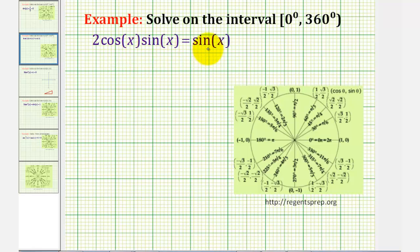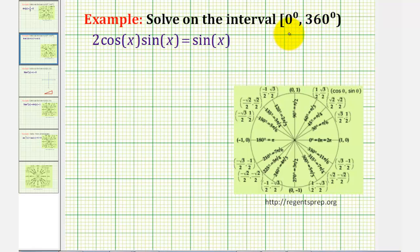We want to solve the given trig equation on the interval from zero degrees to 360 degrees. Notice how the interval is closed on zero, meaning it includes zero degrees, but it's open on 360 degrees, which means it does not include 360 degrees. Or if we wanted to solve this equation using radians, we'd have the interval from zero to two pi, where the interval is closed on zero radians and open on two pi radians.